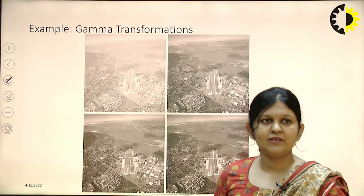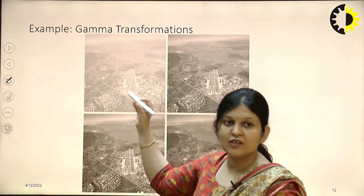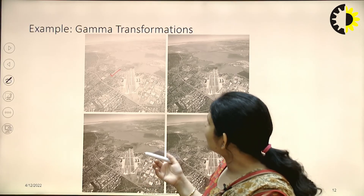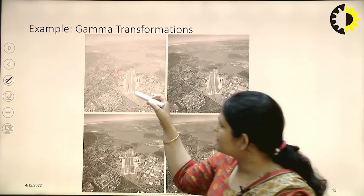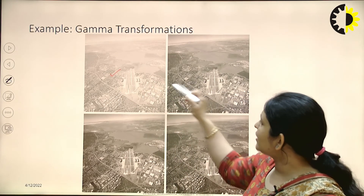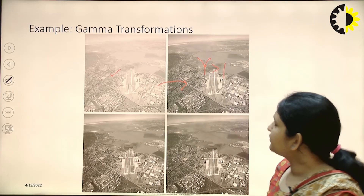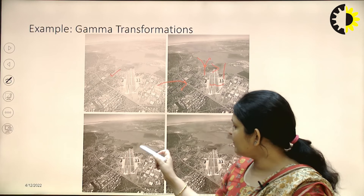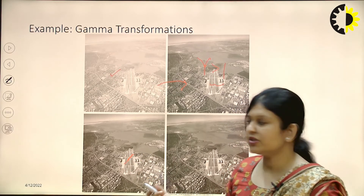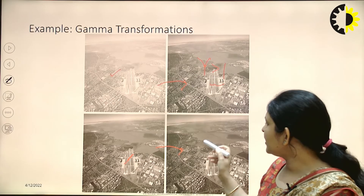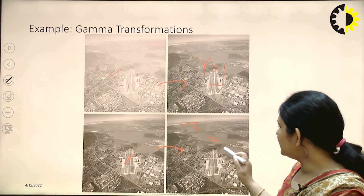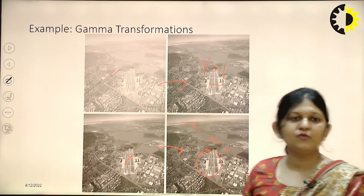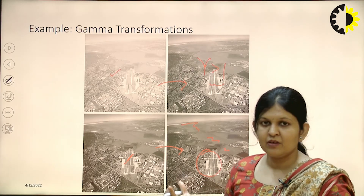Here is another example of gamma transformation. This is an aerial view of a city that appears whitish because of fog, so we cannot clearly distinguish between various objects like rivers and buildings. We apply gamma greater than 1 to move the image toward the darker side. Starting with a small gamma greater than 1 and gradually increasing it, we get more clarity. Eventually we can clearly see a river flowing, buildings, and a playground. Likewise, we can improve images depending on whether they are too whitish or too dark.